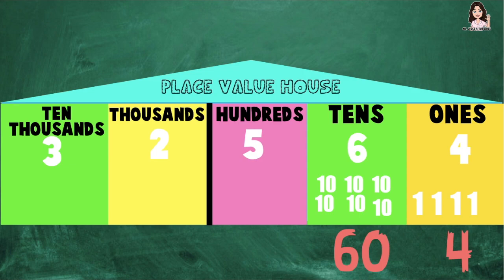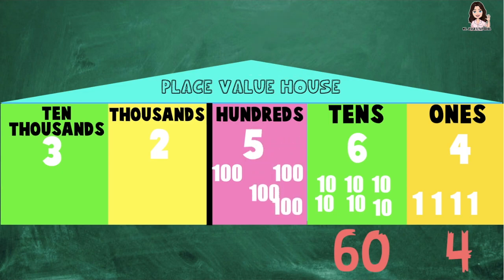Let's proceed to the value of digit 5 at the hundreds place. Count with me: 100, 200, 300, 400, 500. So the value of digit 5 at the hundreds place is 500.